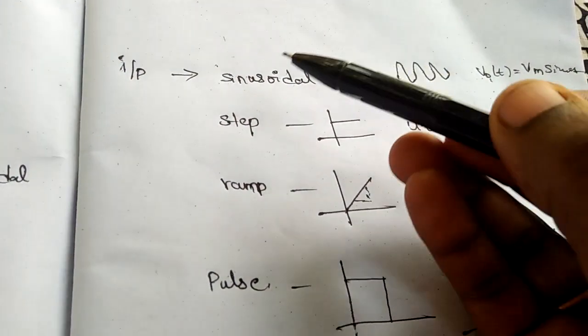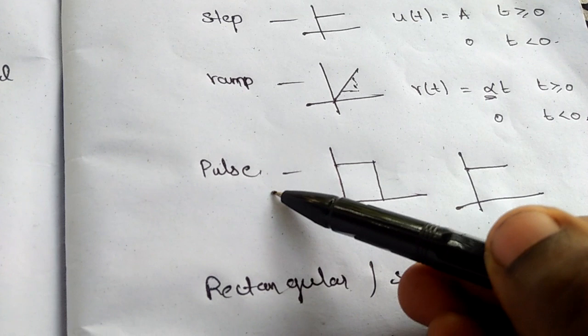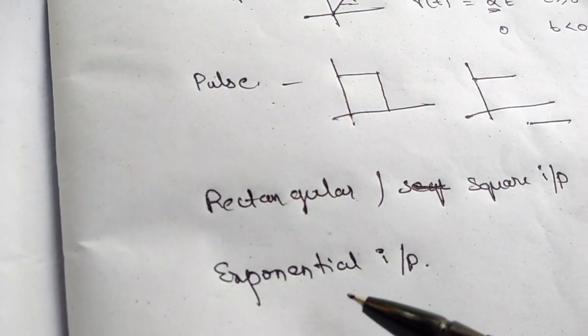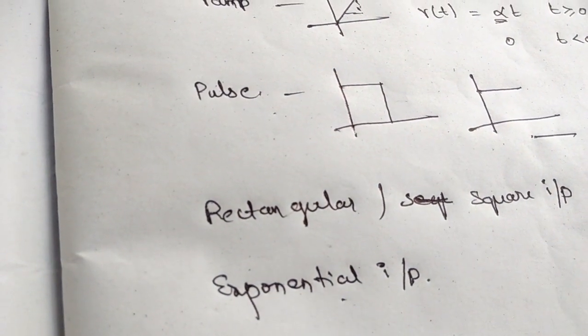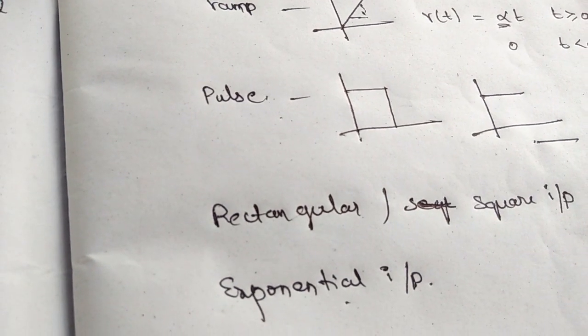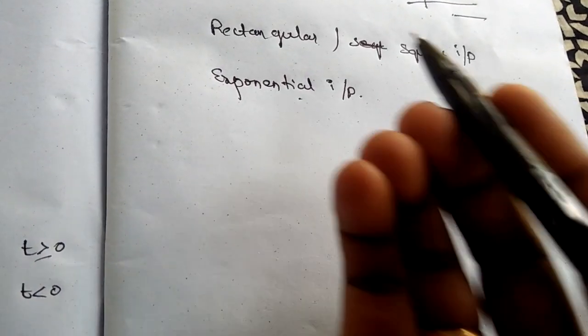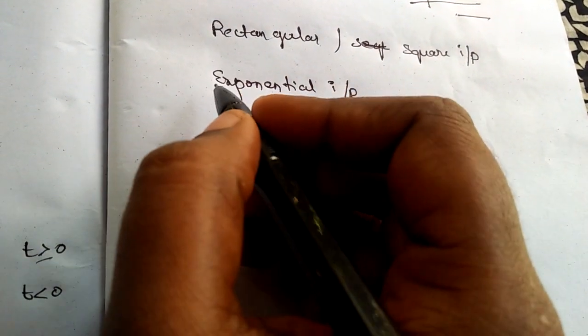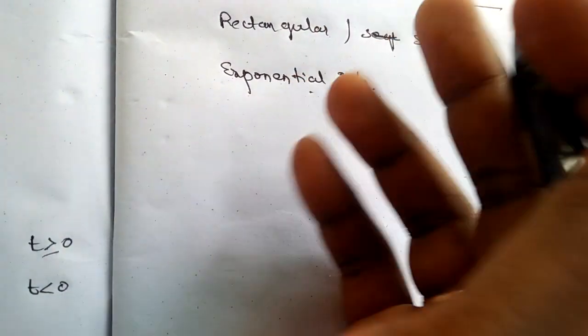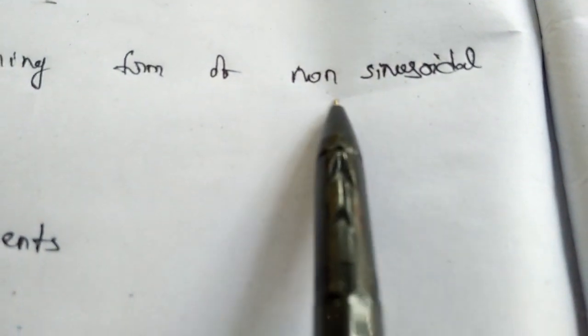By using sinusoidal, step, ramp, pulse, rectangular, and exponential inputs, we are finding the response of linear networks. According to the definition of linear wave shaping, we are altering the shape of a non-sinusoidal signal.